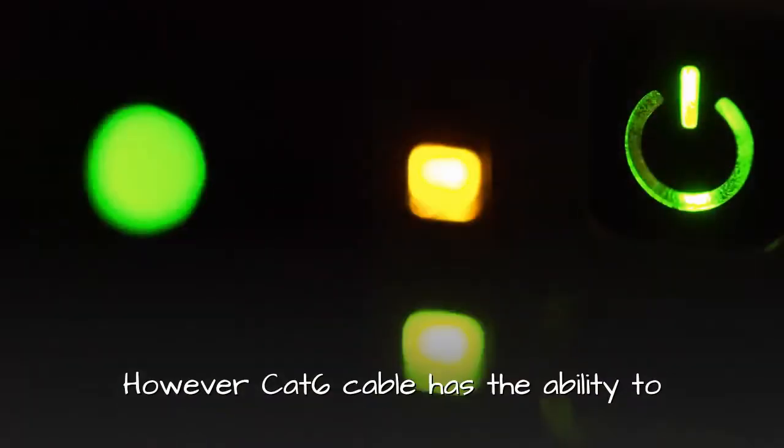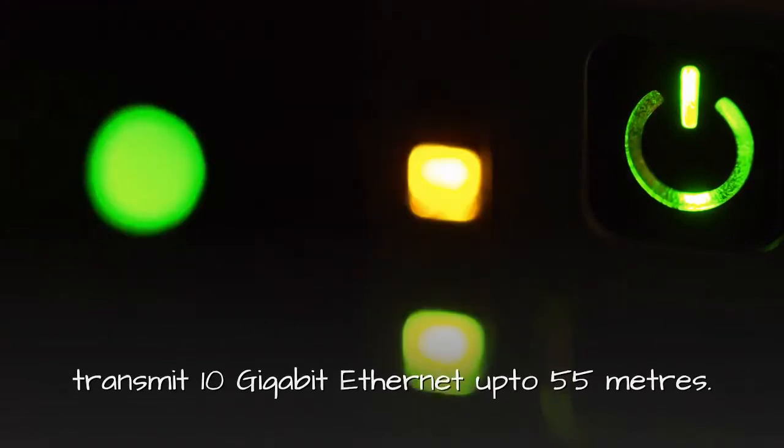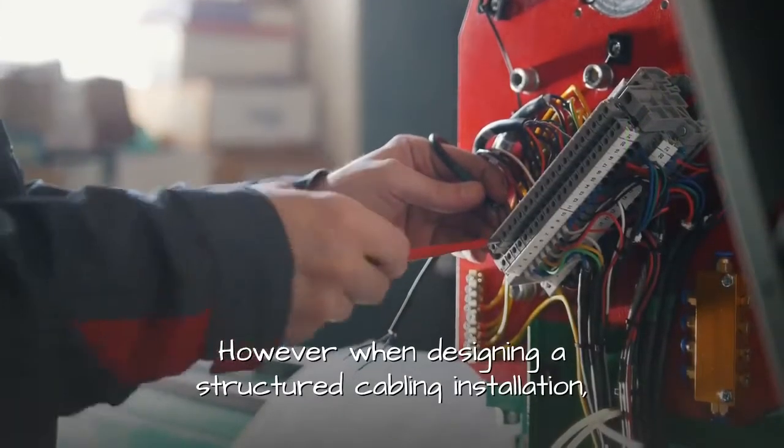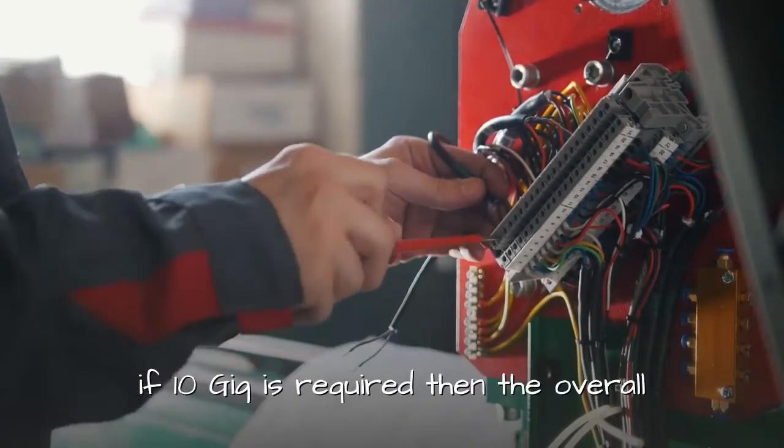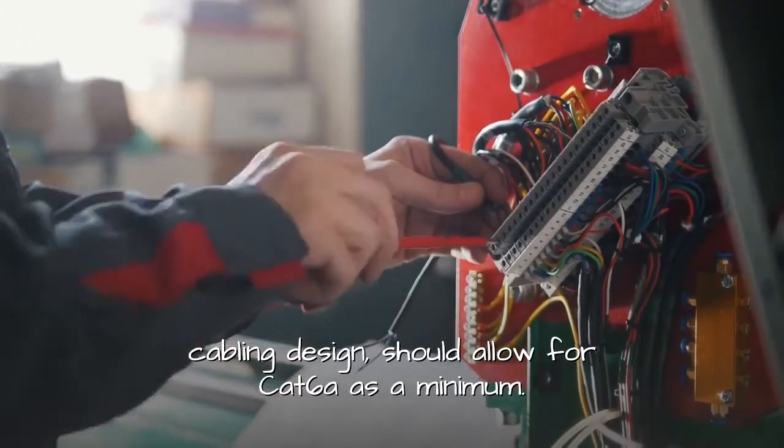However, CAT6 cable has the ability to transmit 10 Gigabit Ethernet up to 55 meters. However, when designing a structured cabling installation, if 10 Gig is required then the overall cabling design should allow for CAT6a as a minimum.